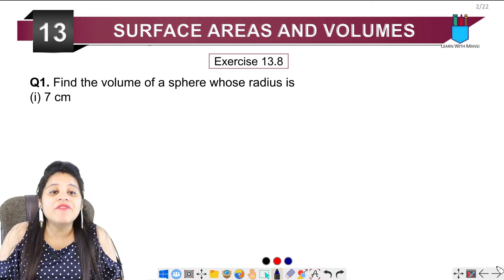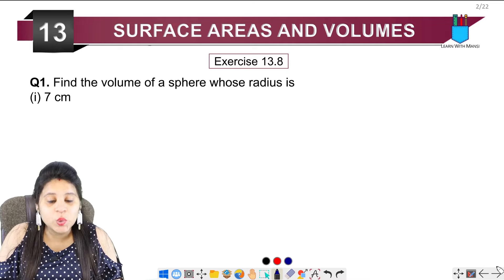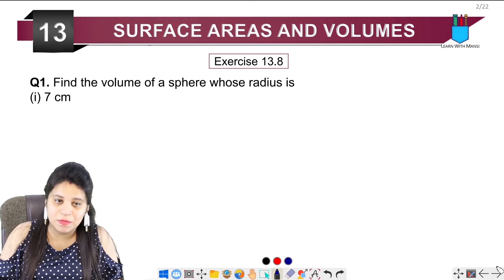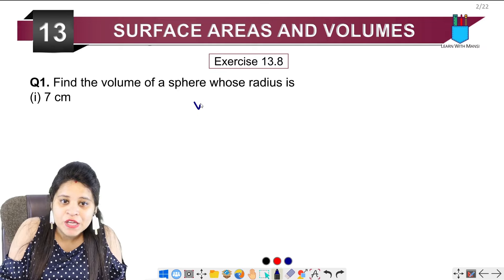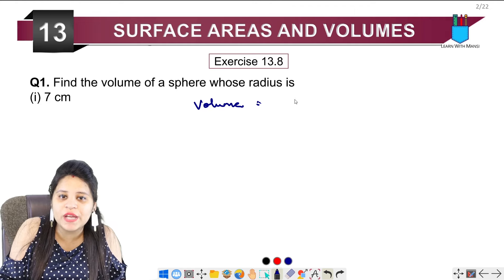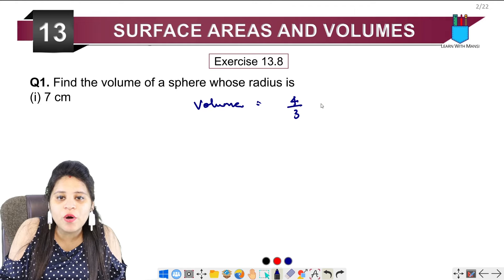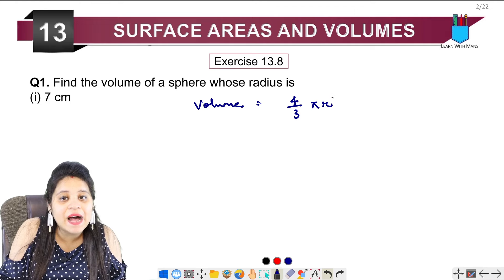First of all, find the volume of sphere whose radius is 7 cm. What do you need to find the volume? We need to know the formula that the volume of sphere is 4 upon 3 pi r cube.